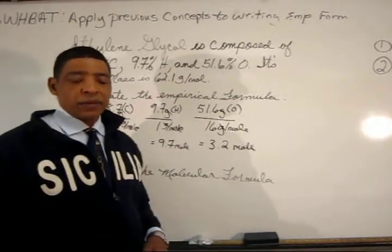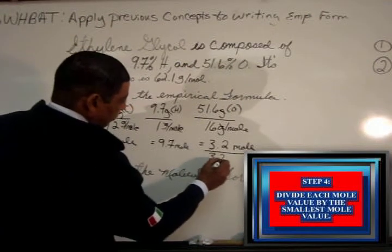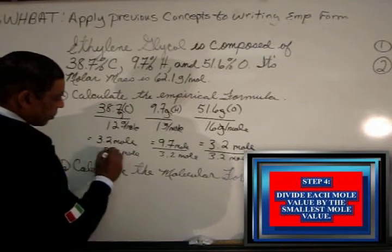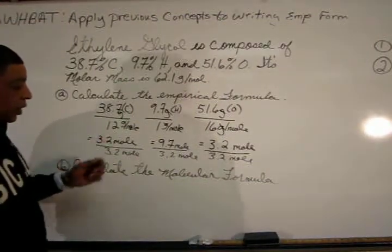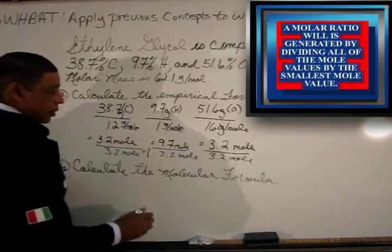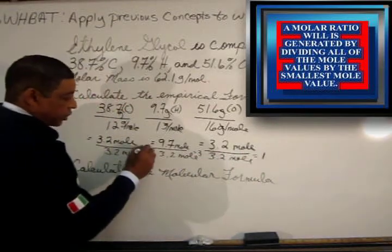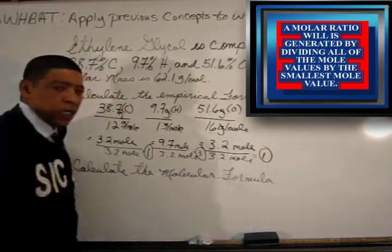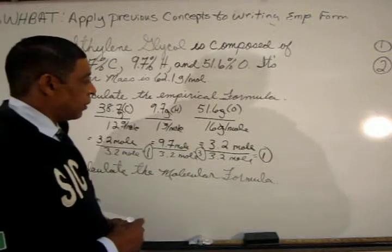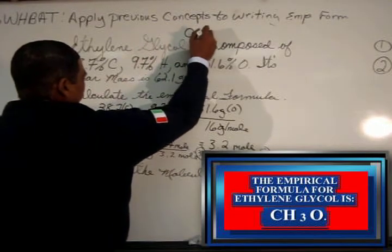The next step in the process is to generate a molar ratio. To do so, simply divide by the smallest mole value, which will be 3.2 moles. 3.2 divided by 3.2 equals 1; 9.7 divided by 3.2 equals 3; and 3.2 divided by 3.2 equals 1. So the ratio is 1 to 3 to 1. This ratio represents the subscripts in the empirical formula, so the empirical formula for this compound is CH₃O.